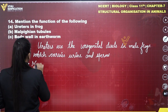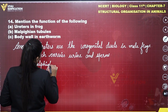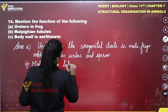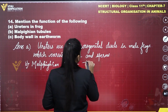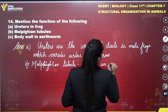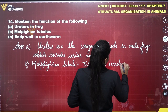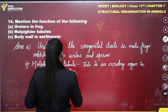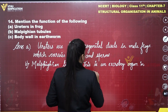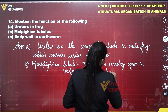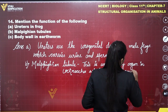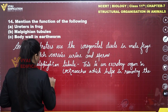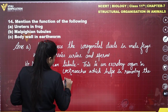For answer (b), the Malpighian tubule: the Malpighian tubule is an excretory organ in cockroaches, which helps in removing the metabolic wastes from the body.